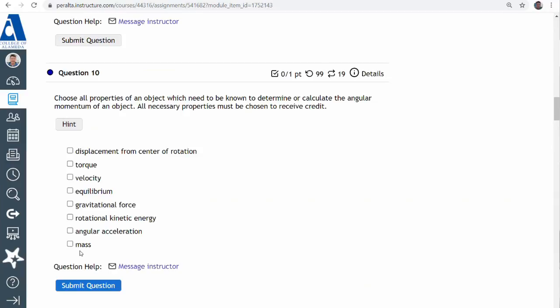Now, rotational inertia can be figured out from mass and how it's distributed. So it's displacement from center of rotation. So that's one, inertia or mass part.